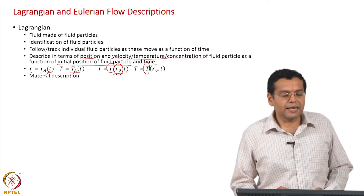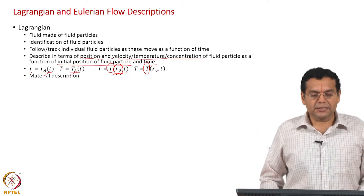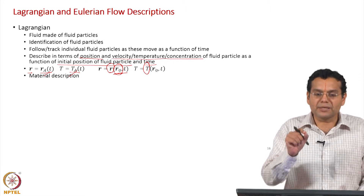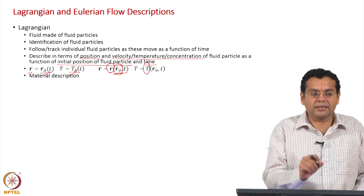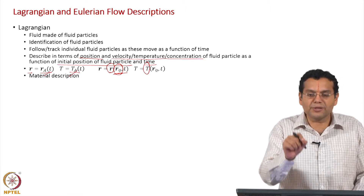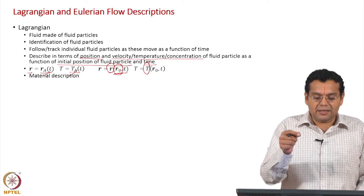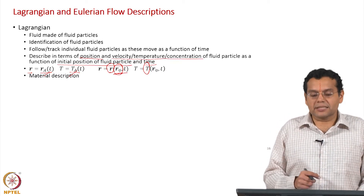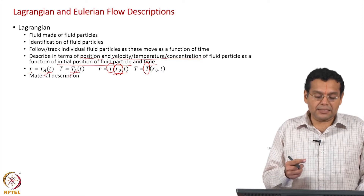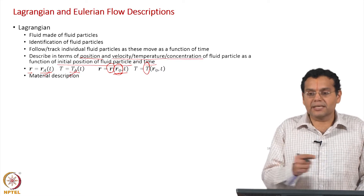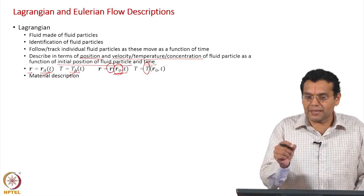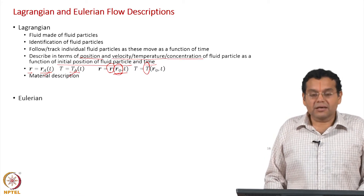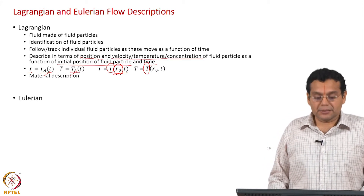Another name for Lagrangian description is material description. Why? Because you are following a material particle — a fluid particle — and that is why Lagrangian description is also called material description: you are following a fluid particle, which is a material particle.